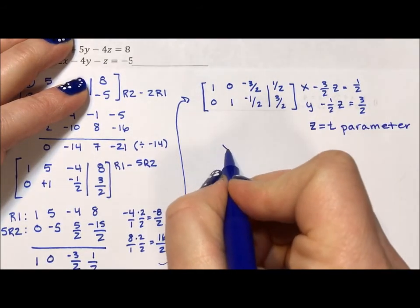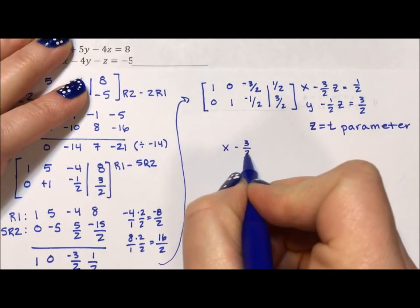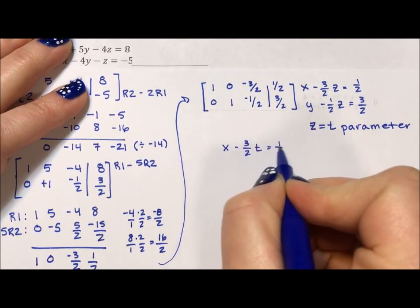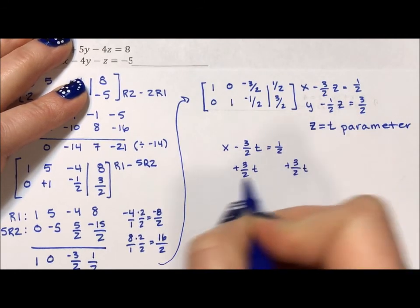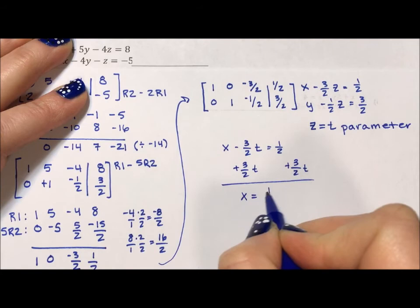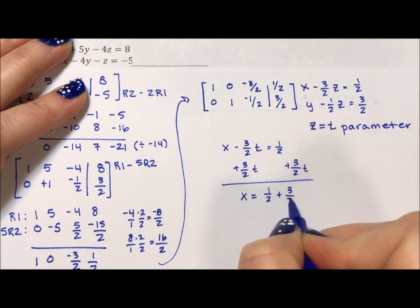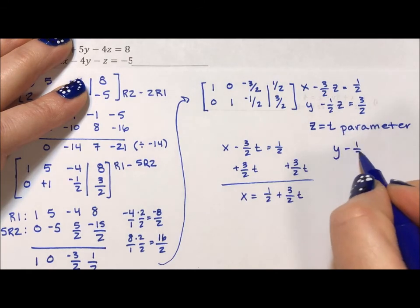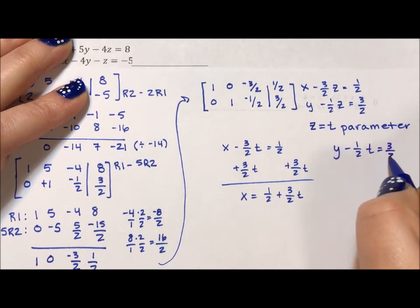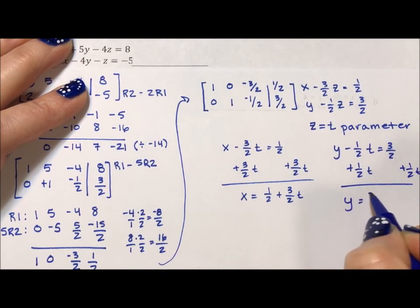So then x minus 3 halves t is equal to 1 half. We add the 3 halves t to both sides. And we get that x is equal to 1 half plus 3 halves t. My y minus 1 half t is equal to 3 halves. We add that 1 half t to both sides. And we get that y is equal to 3 halves plus 1 half t.